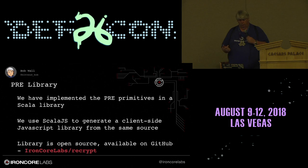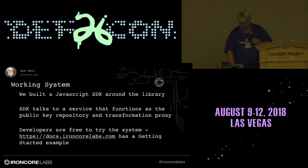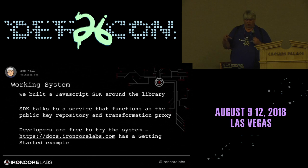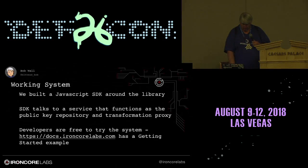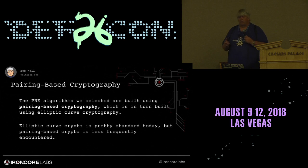We have implemented the primitives in a Scala library. We use Scala.js to generate a client-side JavaScript library. It's open source. We also built a JavaScript SDK around it that talks to a service that is the public key repository and the transform proxy. That part isn't open source, but we allow free sign-ups if you want to play around with it. The library is open source, though it doesn't have some of the surrounding tools to make key management easy. Now I want to talk about some of the math under the hood that makes this work — it's pairing-based cryptography, and pairings are built on top of elliptic curves.